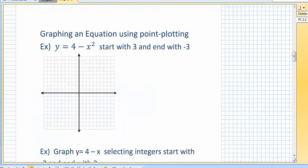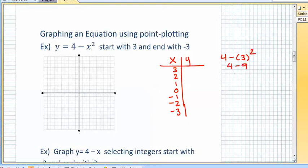Graphing an equation using a chart or point-plotting. So basically if we make a table, it says to start with three and end with negative three. So we're going to go three, two, one, zero, negative one, negative two, negative three. And we're going to substitute them in. So four minus three squared. Well, four minus nine gives me a negative five. Four minus two squared, that means four minus four is zero. And four minus one squared, four minus one is three. And you just keep going. Four minus zero is four.